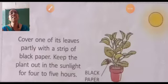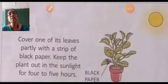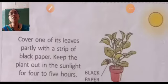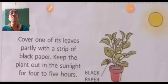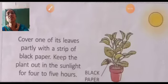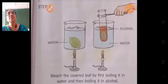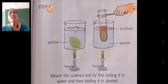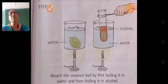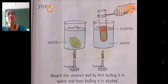Cover one of its leaves partly with a strip of black paper. Then keep the plant out in the sunlight for 4 to 5 hours.